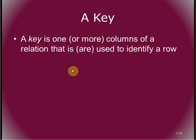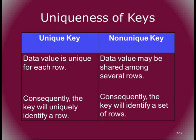A key is one or more columns of a relation used to identify a row. Some keys are unique — the data value is unique for each row, so the key uniquely identifies that record, like your 790 student number. Non-unique keys may be shared among several rows — for instance, a zip code might appear in multiple records, but you could use it to sort regions or find all people with zip code 59801.